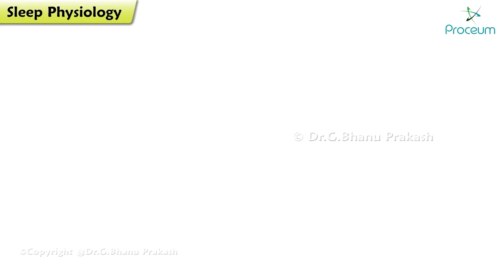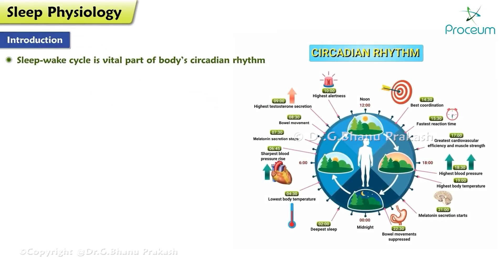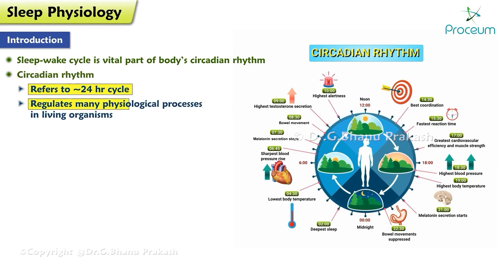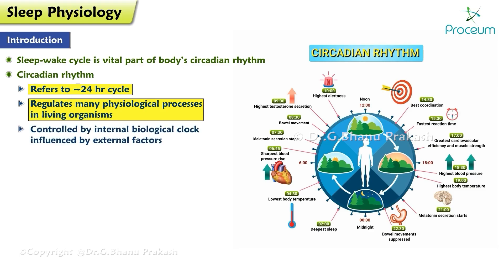Sleep physiology introduction. The sleep-wake cycle is a vital part of the body's circadian rhythm. A circadian rhythm refers to the approximately 24-hour cycle that regulates many physiological processes in living organisms, including humans. These rhythms are controlled by an internal biological clock that is influenced by external factors such as light, temperature, and social cues.